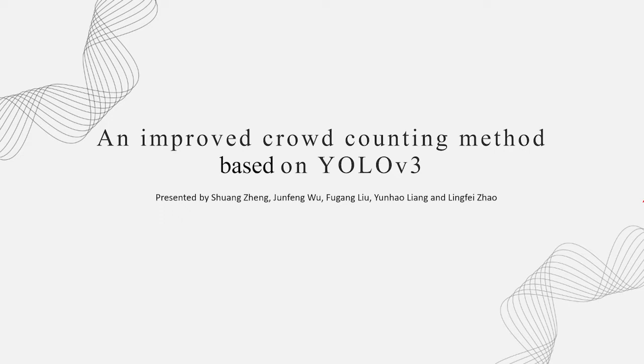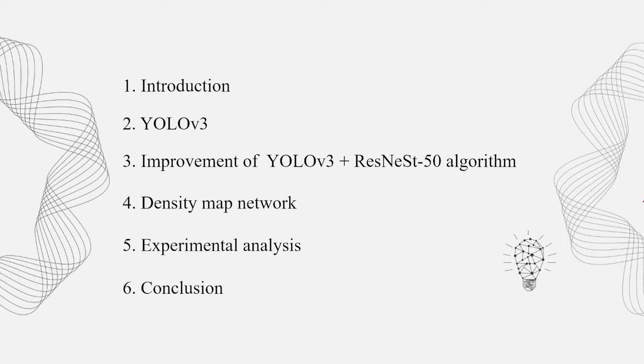The outline of the paper is as follows. The first part I will introduce the background of this research. The second part I will talk about YOLOv3. The third part covers the improvement of algorithm. The fourth part explains density map network. And then I will introduce the experimental analysis. Finally, a simple conclusion is given. Let's move on to the first part of this presentation.